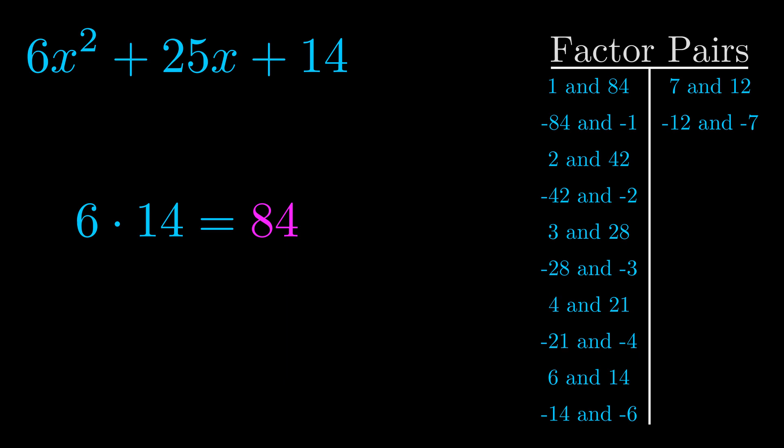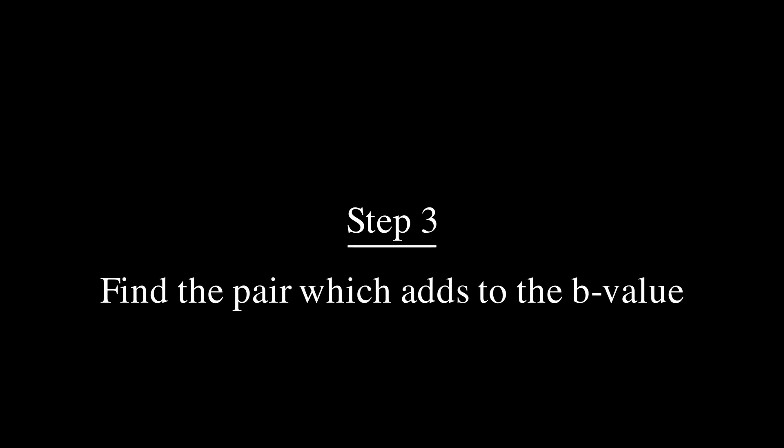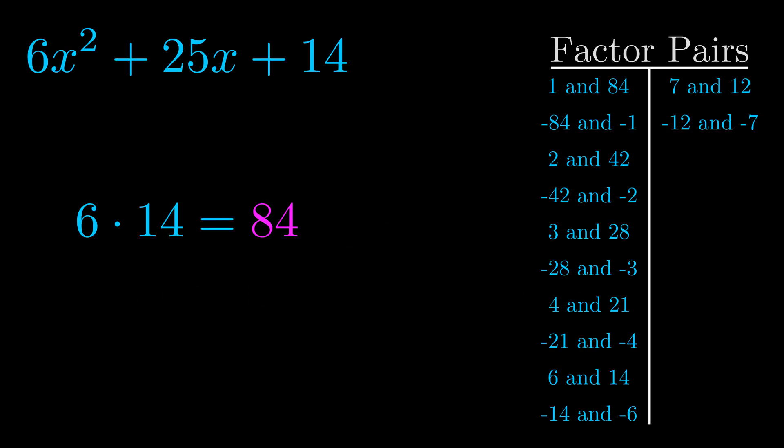Now once you have these factor pairs the goal is to find which of these pairs adds to the b value. The b value is the coefficient on the x term. That's the middle term, the one that we haven't done anything with yet. And really this is the only factor pair that we need.